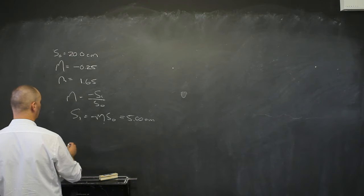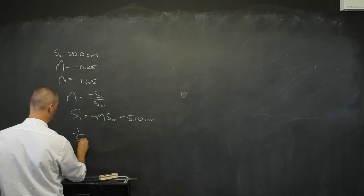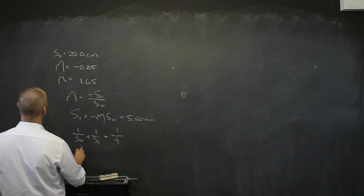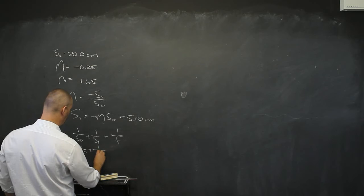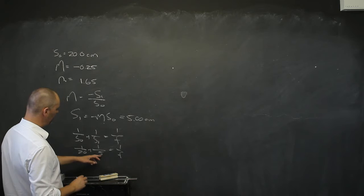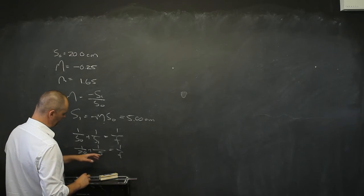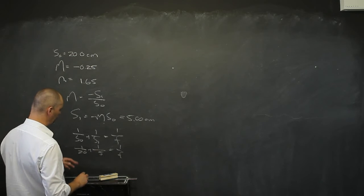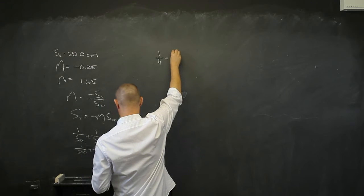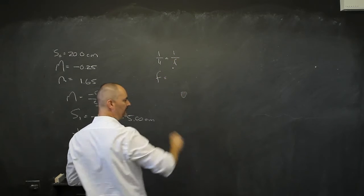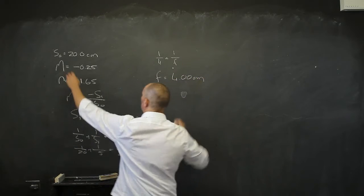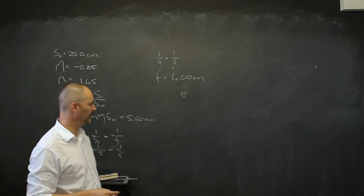Let's see if we can calculate what that focal point is going to be. Well, 1 over s0 plus 1 over si is going to equal 1 over f. So I have 1 over 20 plus 1 over 5, which gives me 1 over f. Making the denominator 20: 1 over 20 plus 4 over 20 equals 5 over 20, which is 1 over 4. So 1 over 4 equals 1 over f, giving a focal distance of 4.00 centimeters. And indeed the object is placed well beyond that focal point.